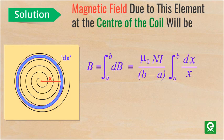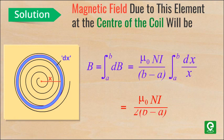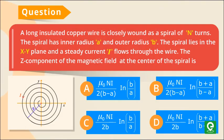...we get magnetic field B = μ₀NI/[2(b-a)] times ln(b/a). Hence option A is the correct answer.